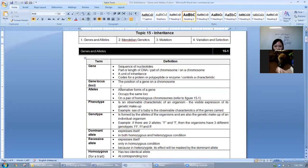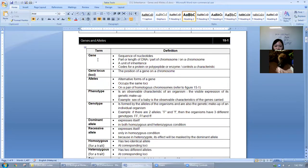Let's take a look at genes and alleles. The term gene refers to a sequence of nucleotides. It's a part or length of DNA, a unit of inheritance that codes for a protein or polypeptide. Gene locus comes from the word location - it tells you the position of the gene. Gene locus is singular, gene loci is plural. It's the position of a gene on a chromosome.